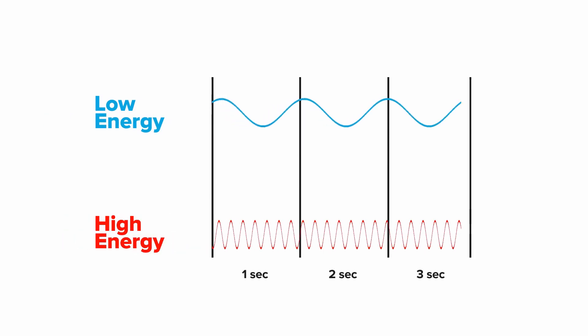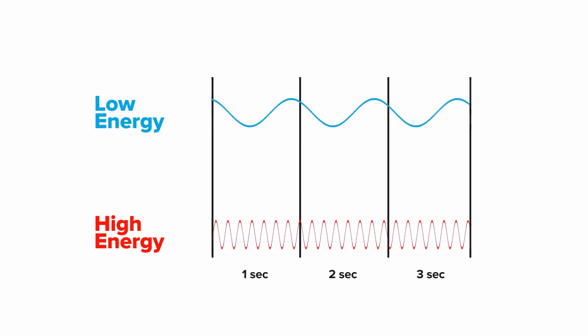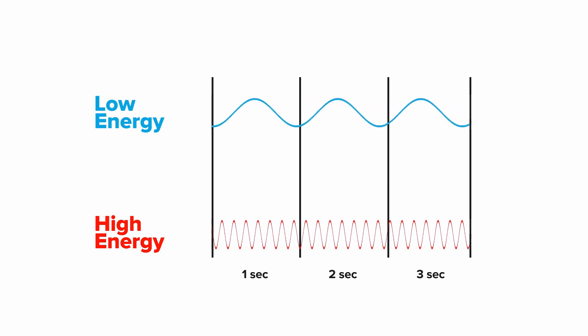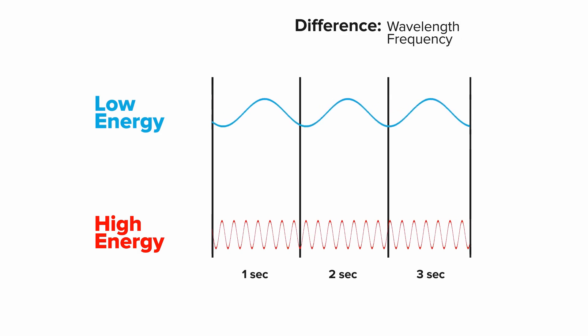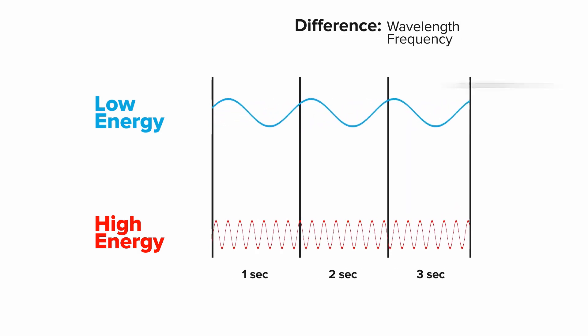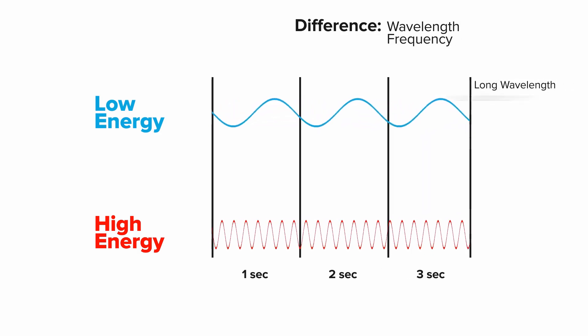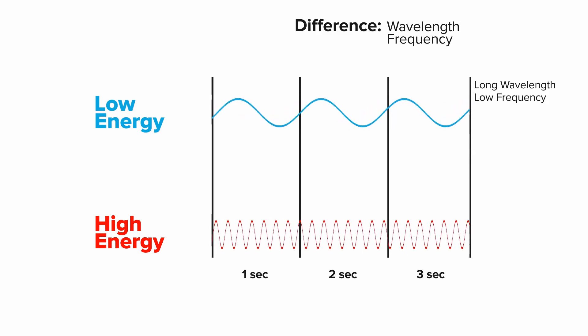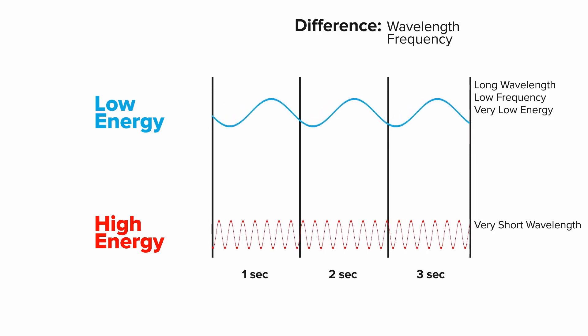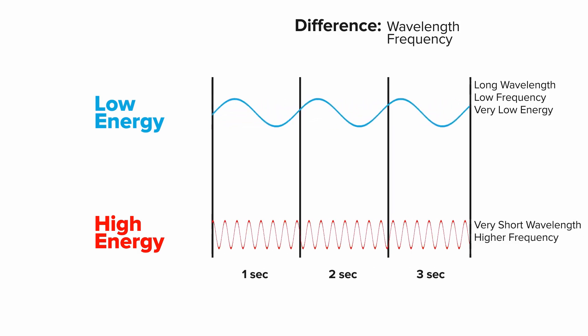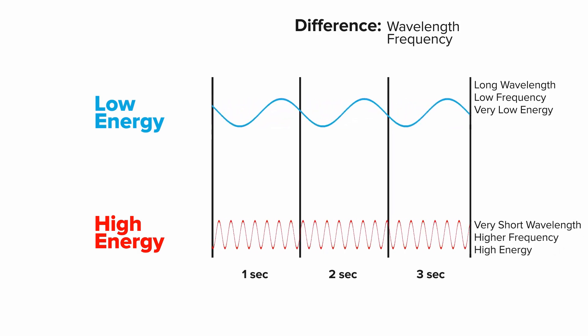You can think of it like this. Both of these photons are traveling at the exact same speed. And for all photons, this is the speed of light. The only difference is the wavelength and the frequency. The upper photon has a very long wavelength. Therefore, it has a low frequency and very low energy. The lower photon has a very short wavelength. This results in a higher frequency and therefore high energy.